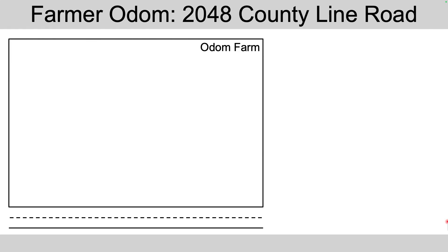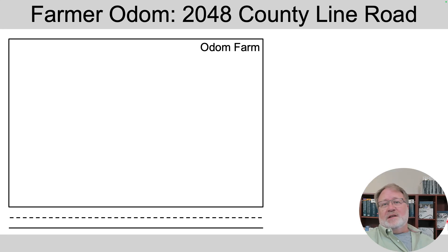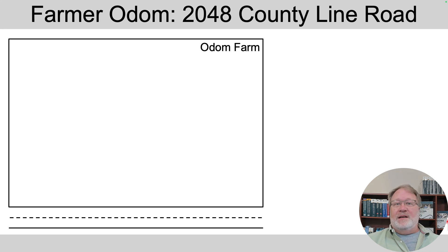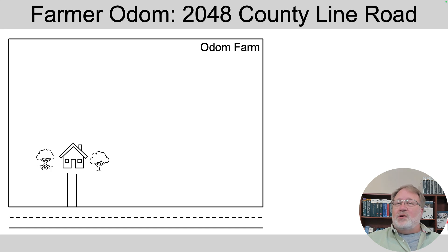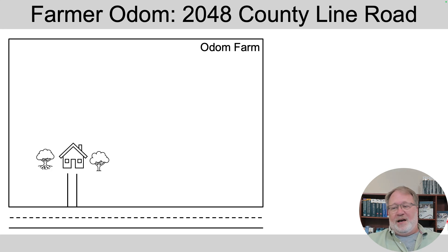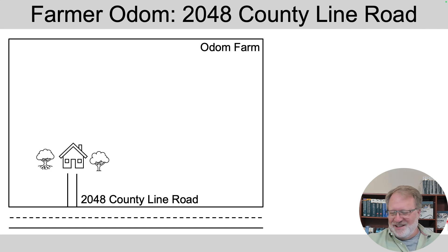IP addresses require planning, so let's look at postal addresses by analogy, since they also require planning. Imagine Farmer Odom has a bunch of land where he grows vegetables. There's a road and his farm. At some point, he built a house, planted some shade trees, and put in a driveway. The postal system just needed one address for this whole piece of land, since the only people receiving mail were those living at Farmer Odom's house — at 2048 County Line Road.